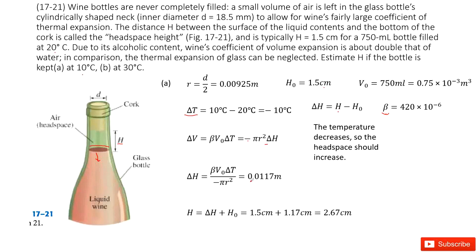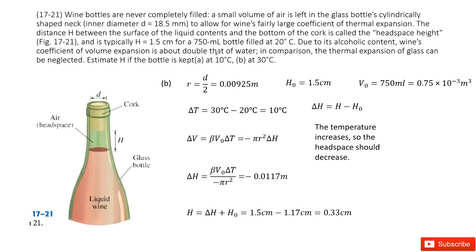So now the next question is what if the temperature changes to 30 degrees. So everything is exactly the same except the delta T. The delta T this time we use final temperature minus initial temperature. We get this becomes 10 degrees.